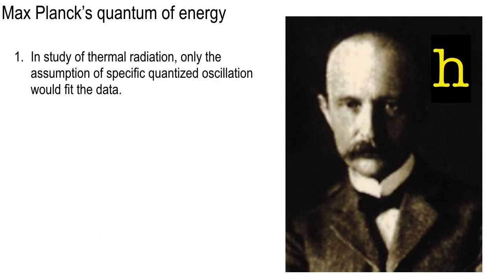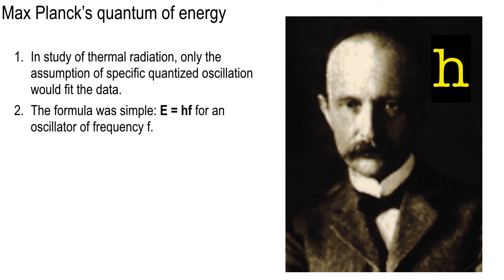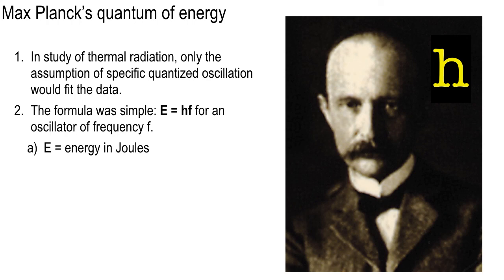Planck assumed quantized oscillations — only certain quanta. The energy equals a constant H (Planck's constant) times the oscillator frequency. If he made his oscillators in the solid black body only have certain frequencies and certain bundles of energy of this size, he could get the curve to dip on both the ultraviolet and infrared sides. Energy is in joules or electron volts.